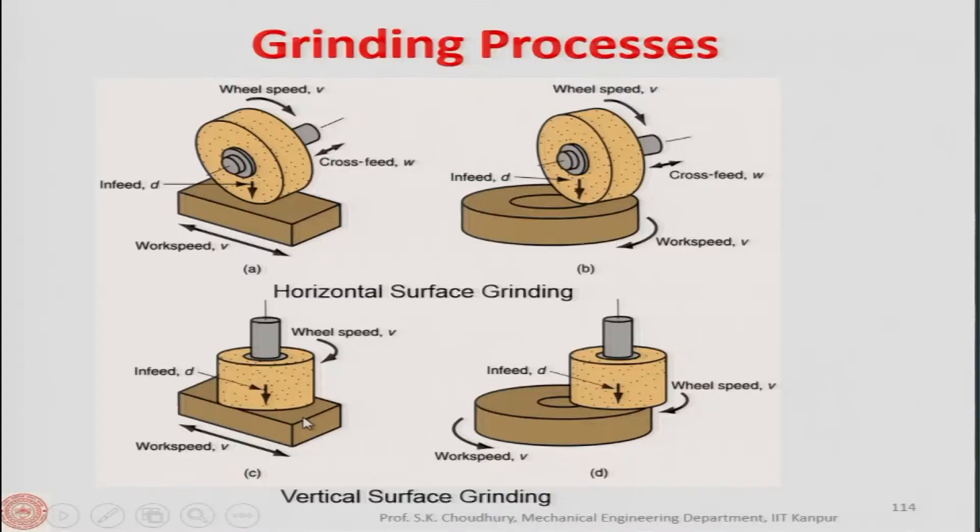Those five parameters are: the type of abrasive grain, the size of the abrasive grain, the grade, the structure, and the bonding material. In this sequence, defined by a letter, digit, letter, digit, and letter, we determine how the grinding wheel can be selected depending on the work material and operating parameters.